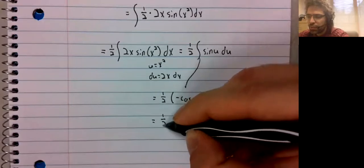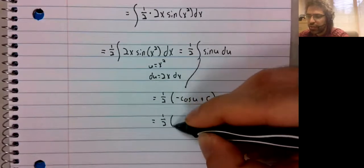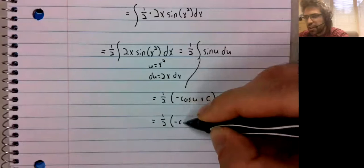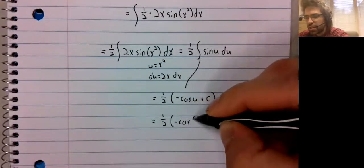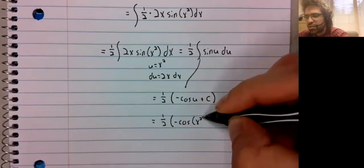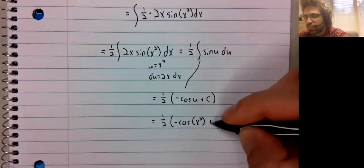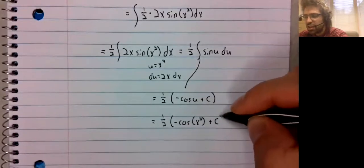Equals negative one half cosine of x squared plus C.